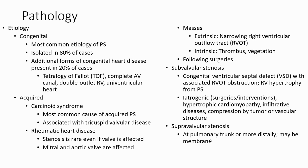Etiology: Congenital causes are more common. Isolated pulmonary valve stenosis accounts for 80% of cases. Additional congenital cardiac disease is present in 20% of cases, such as tetralogy of Fallot. Acquired causes include carcinoid syndrome, the most common cause of acquired pulmonary stenosis, associated with tricuspid valve disease. Rheumatic heart disease causing stenosis is rare.